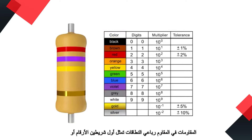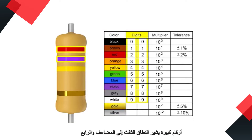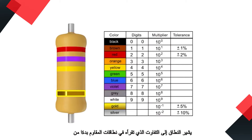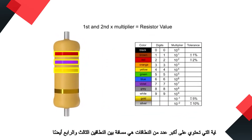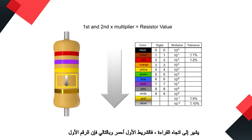In a four-band resistor, the first two bands represent the digits or significant figures. The third band indicates the multiplier and the fourth band indicates the tolerance. You read resistor bands beginning with the end that has the most bands. A space between the third and fourth bands also indicates the reading direction.